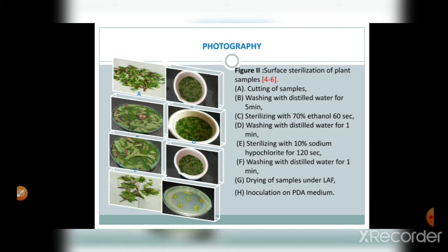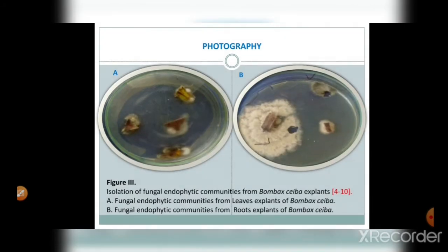The surface sterilization procedure: cutting of samples followed by washing with distilled water for 5 minutes; sterilizing with 70% ethanol for 16 seconds; washing with distilled water for 1 minute; sterilizing with 10% sodium hypochlorite for 120 seconds; washing with distilled water for 1 minute; drying of samples under laminar airflow; inoculation on water dextrose agar media. After inoculation, incubation is done, and fungal endophytes were isolated on potato dextrose agar media.